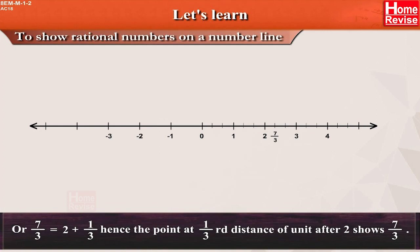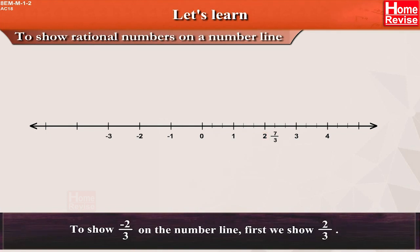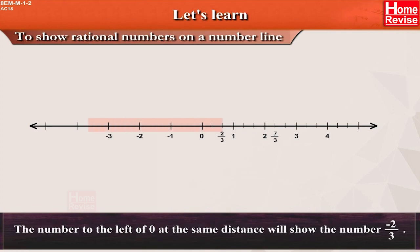Hence, the point at 1 third distance of unit after 2 shows 7 upon 3. To show minus 2 upon 3 on the number line, first we show 2 upon 3 on it. The number to the left of 0 at the same distance will show the number minus 2 upon 3.